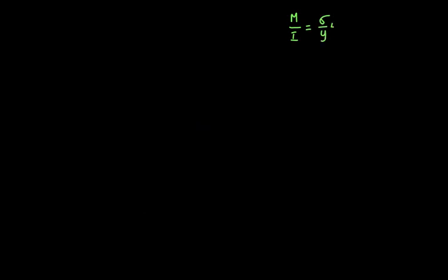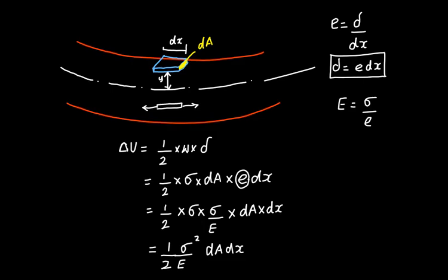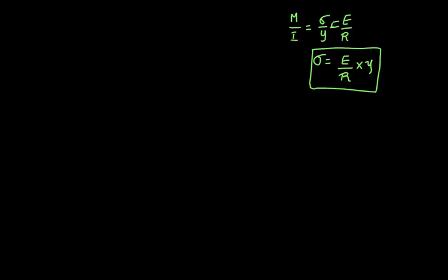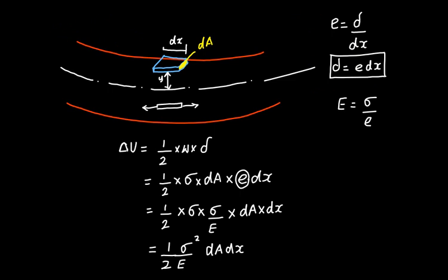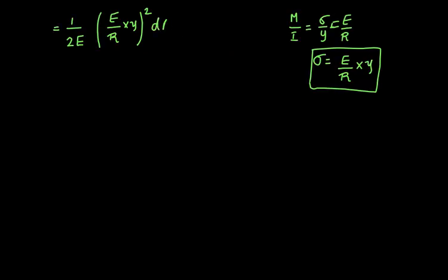In the next step I invoke the bending equation, which is M/I = σ/y = E/R. From this I can work out σ = (E/R)·y. I take this value of σ and plug it into the strain energy expression: δU = (1/2E) × (E/R × y)² × dA × dx.